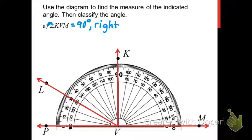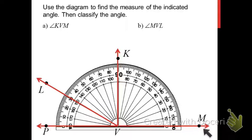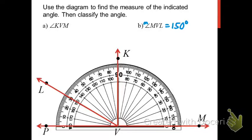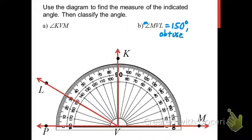Now let's try another angle: angle MVL. One of the sides happens to be going through the zero, so we just look at the coordinate the other side goes through — which is either 30 or 150. This angle is much bigger than 90 degrees, so we're going to use the larger of the two numbers. The measure of angle MVL is 150 degrees. Any angle between 90 and 180 degrees — not including either endpoint — is called an obtuse angle.